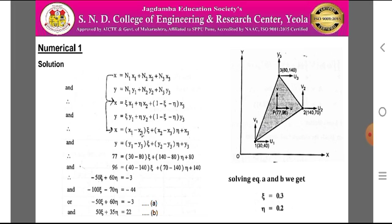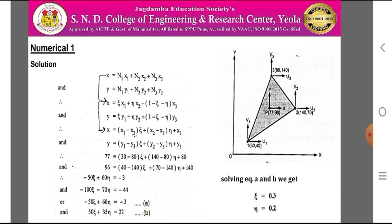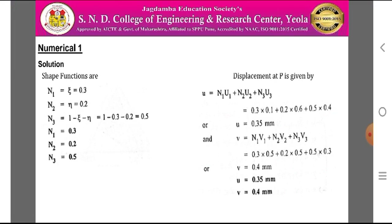Therefore, epsilon = 0.3 and neta = 0.2. The shape functions are: N1 = epsilon = 0.3, N2 = neta = 0.2, and N3 = 1 − epsilon − neta = 0.5. The displacement at point P is given by u = N1·u1 + N2·u2 + N3·u3 = 0.3×0.1 + 0.2×0.6 + 0.5×0.4, which gives u = 0.35 mm.